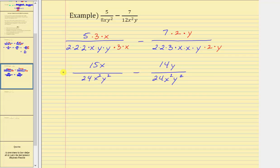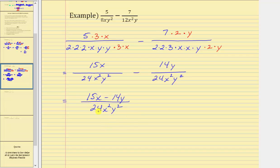The second fraction is equivalent to 14y over the LCD of 24x squared y squared. Now that we have a common denominator, we can go ahead and subtract. The denominator remains the same, and subtracting the numerators gives us 15x minus 14y. Since 15x minus 14y does not factor, this does not simplify, and therefore we are done.